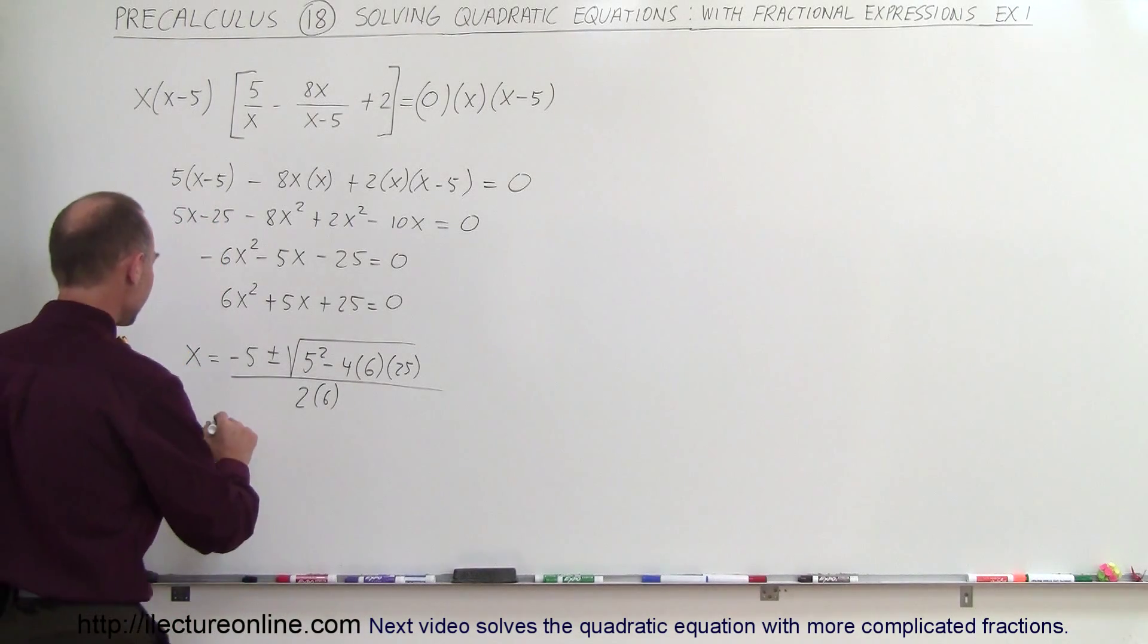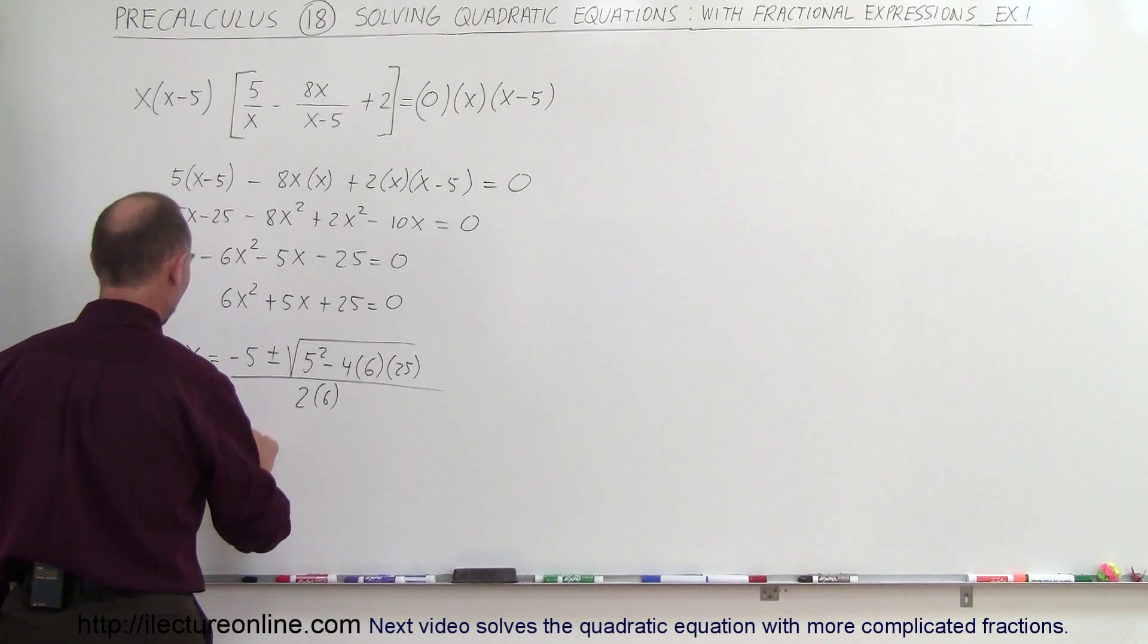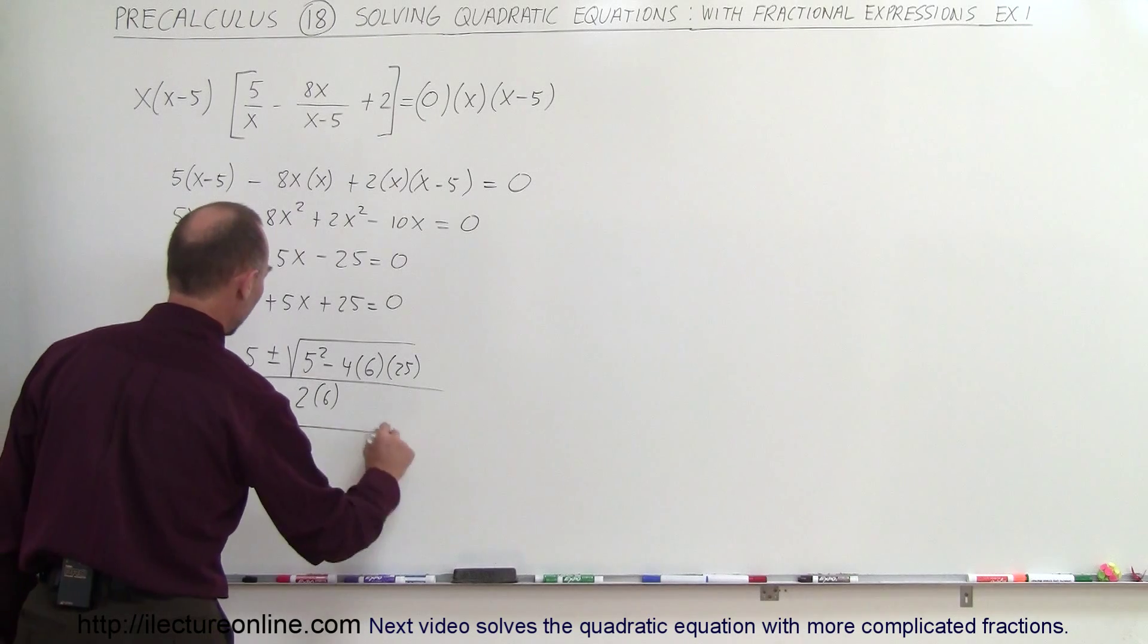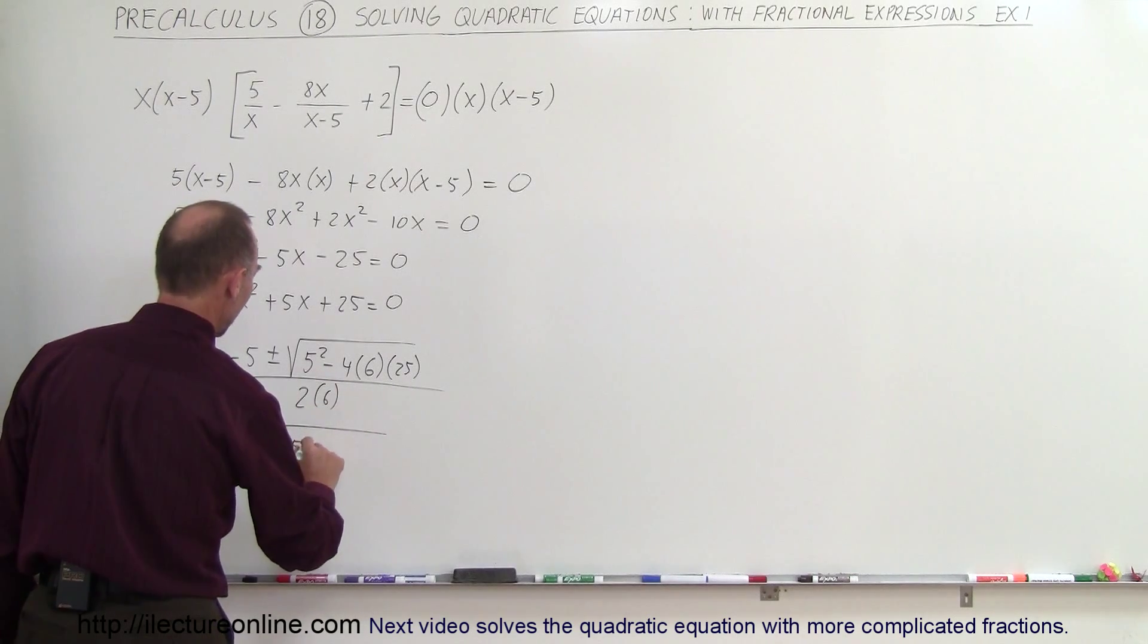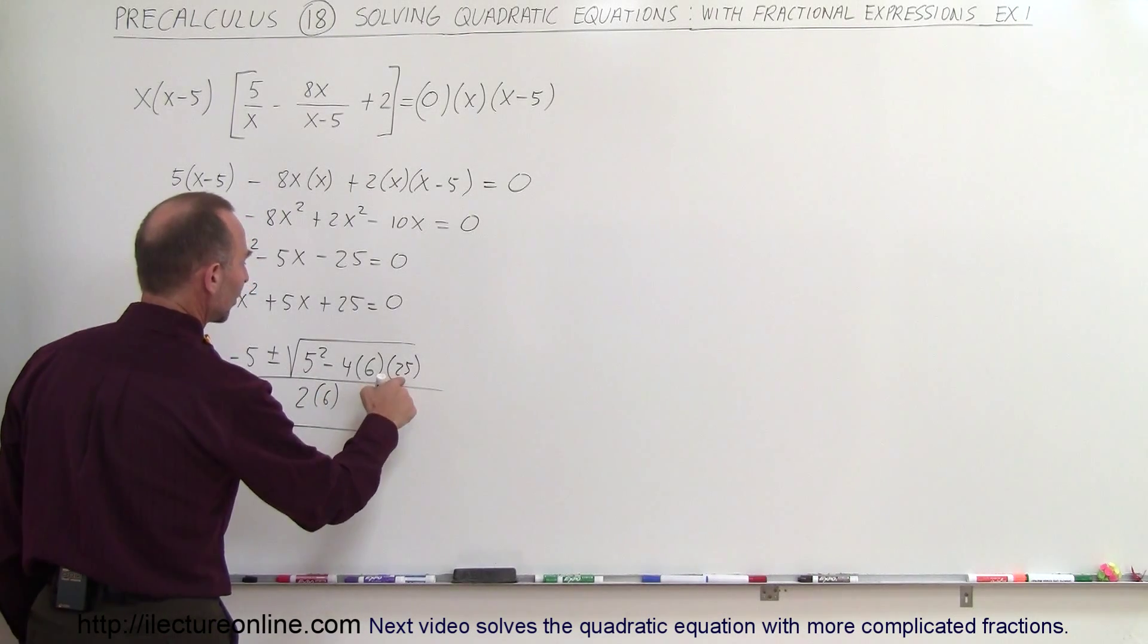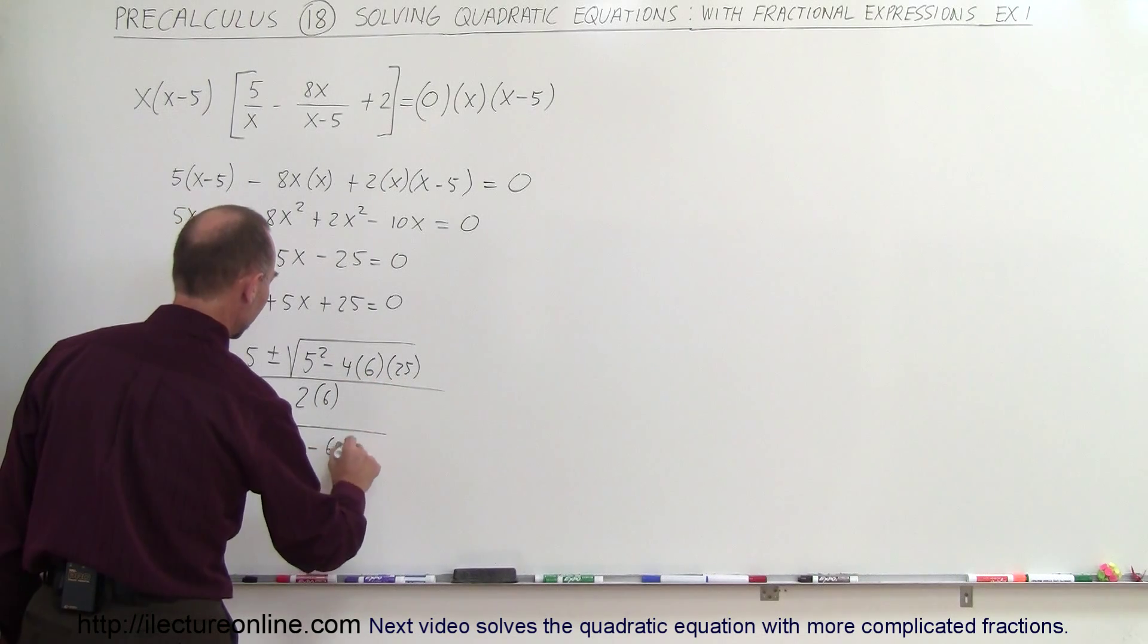Simplifying that, we get x equals minus 5 plus or minus the square root of, that would be 25 minus, 4 times 25 is 100, times 6 is 600.